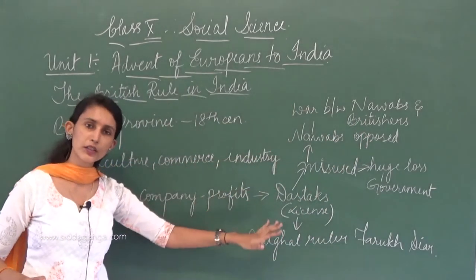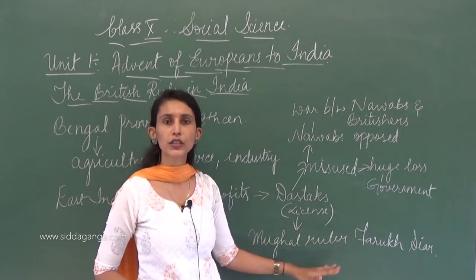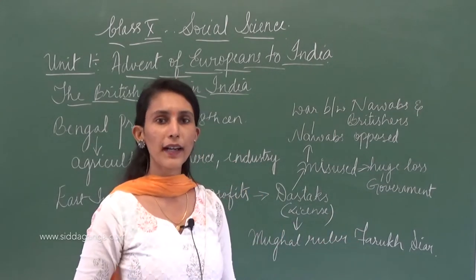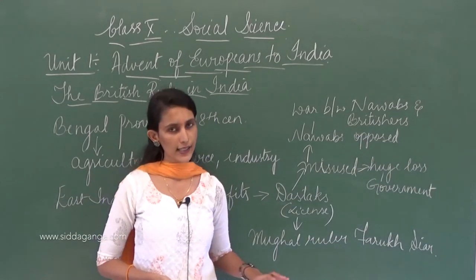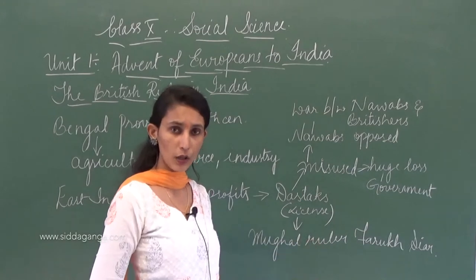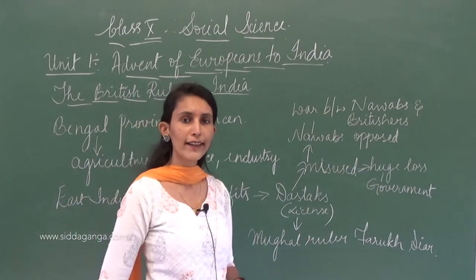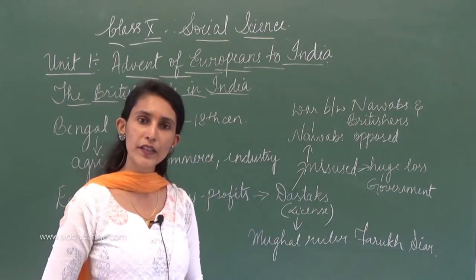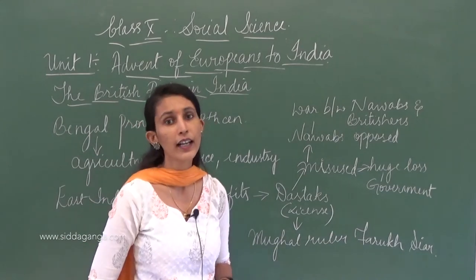At that point in time, there were two more battles. One we will discuss today, and another — the Battle of Buxar — we will discuss in the next class. Today I want you to concentrate on how the British started their rule and what led to two wars: the Battle of Plassi in 1757 and the Battle of Buxar in 1764.